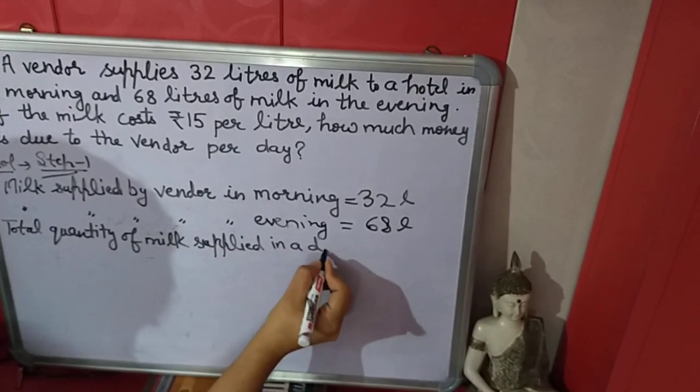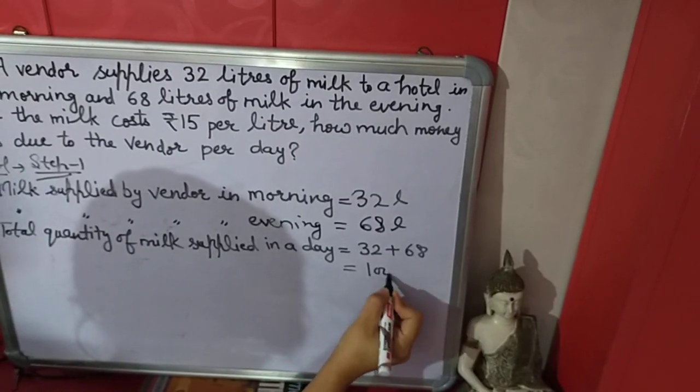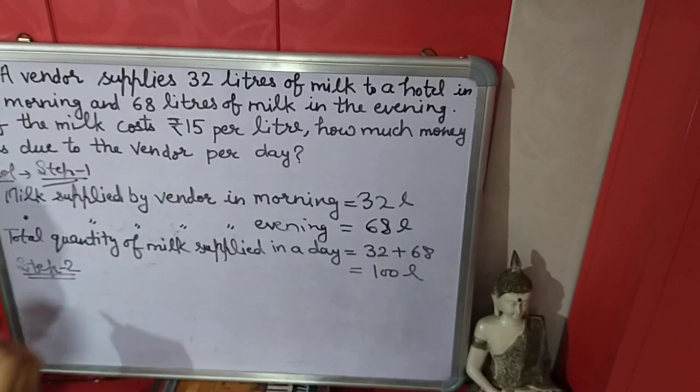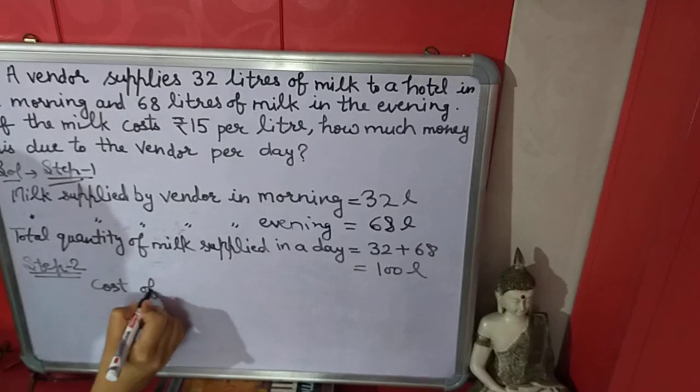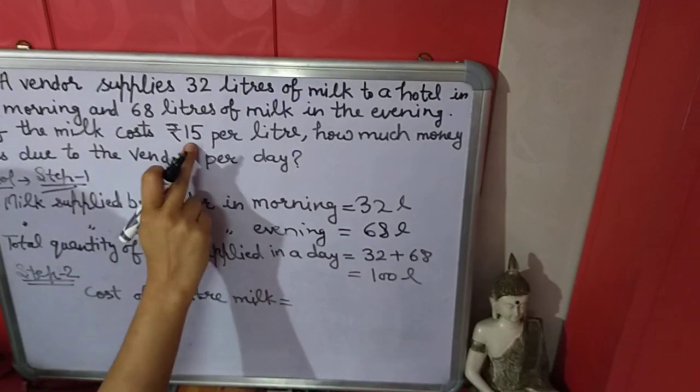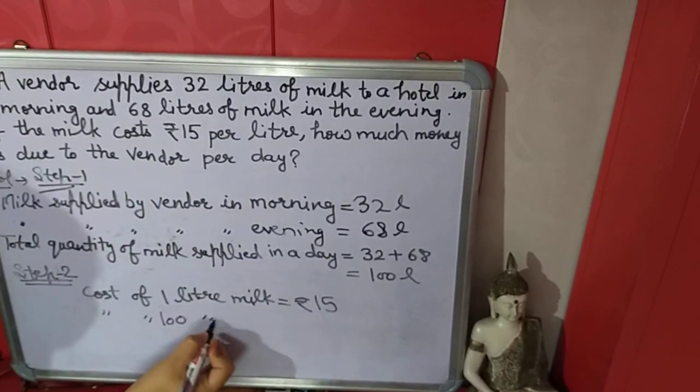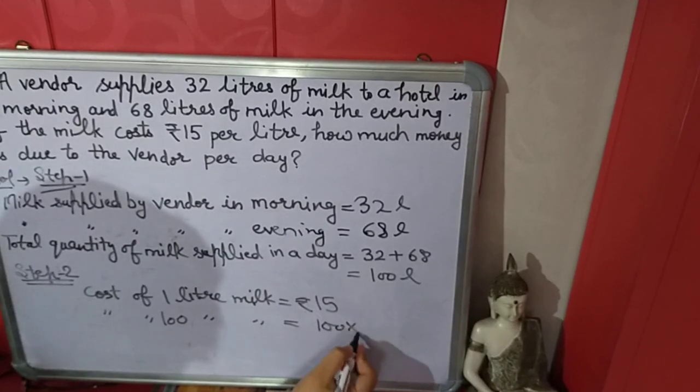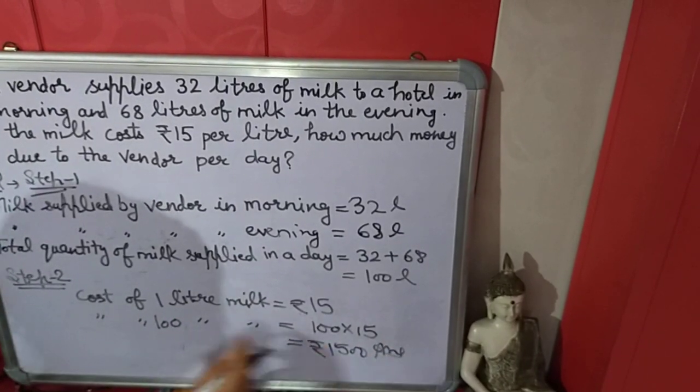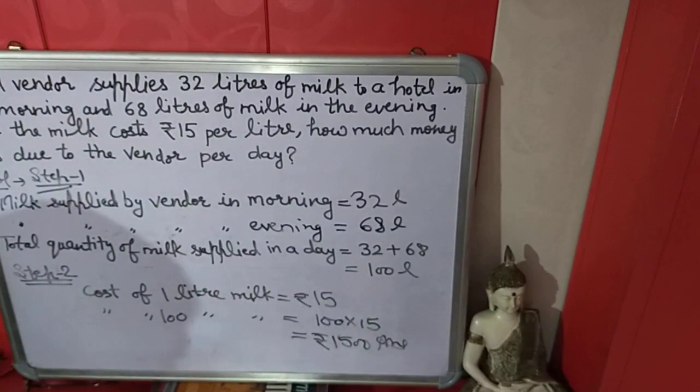Now we will find the cost of 100 liters milk. Step 2: cost of 1 liter milk is rupees 15. Now cost of 100 liters milk: multiply 100 into 15, it is rupees 1500. This is the cost of 100 liters milk. So how much money is the vendor due per day? Rupees 1500.